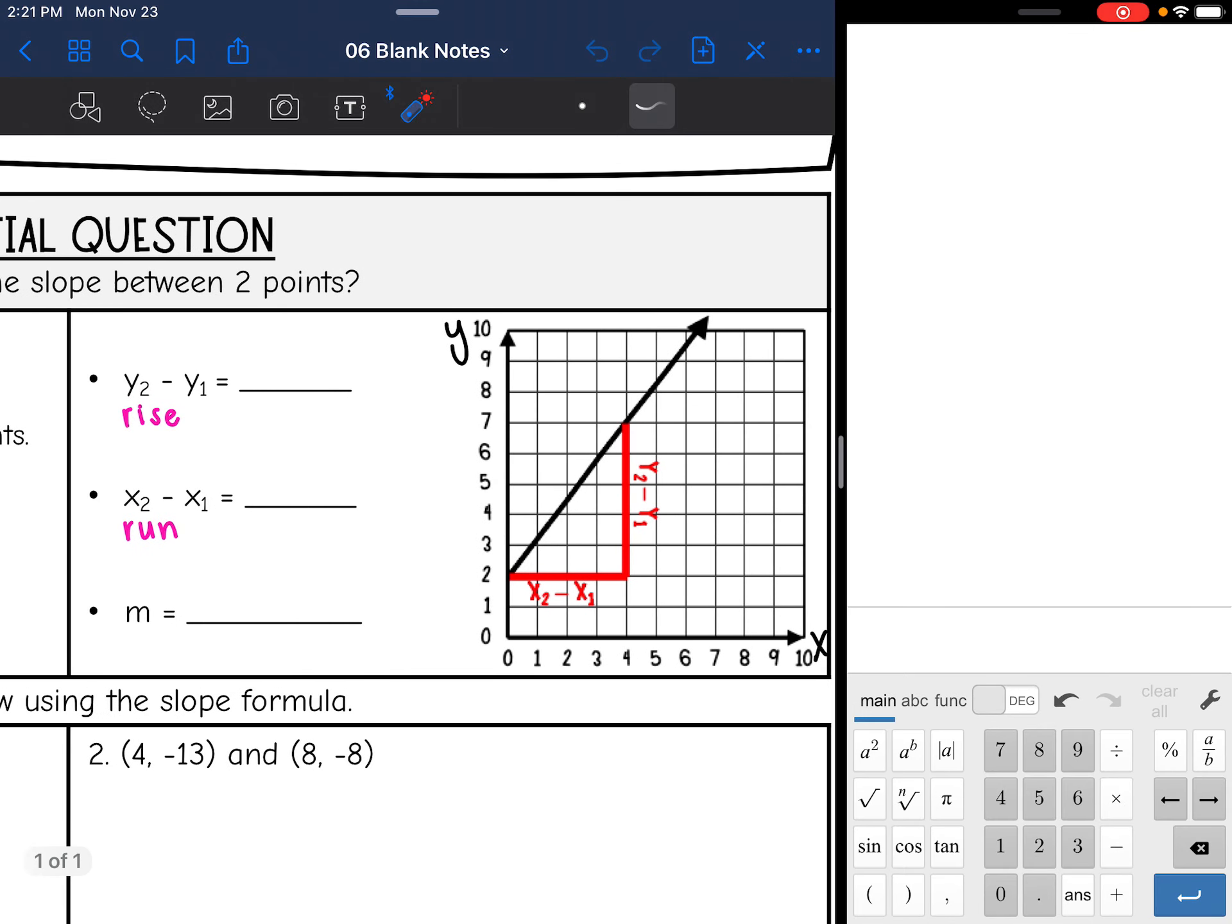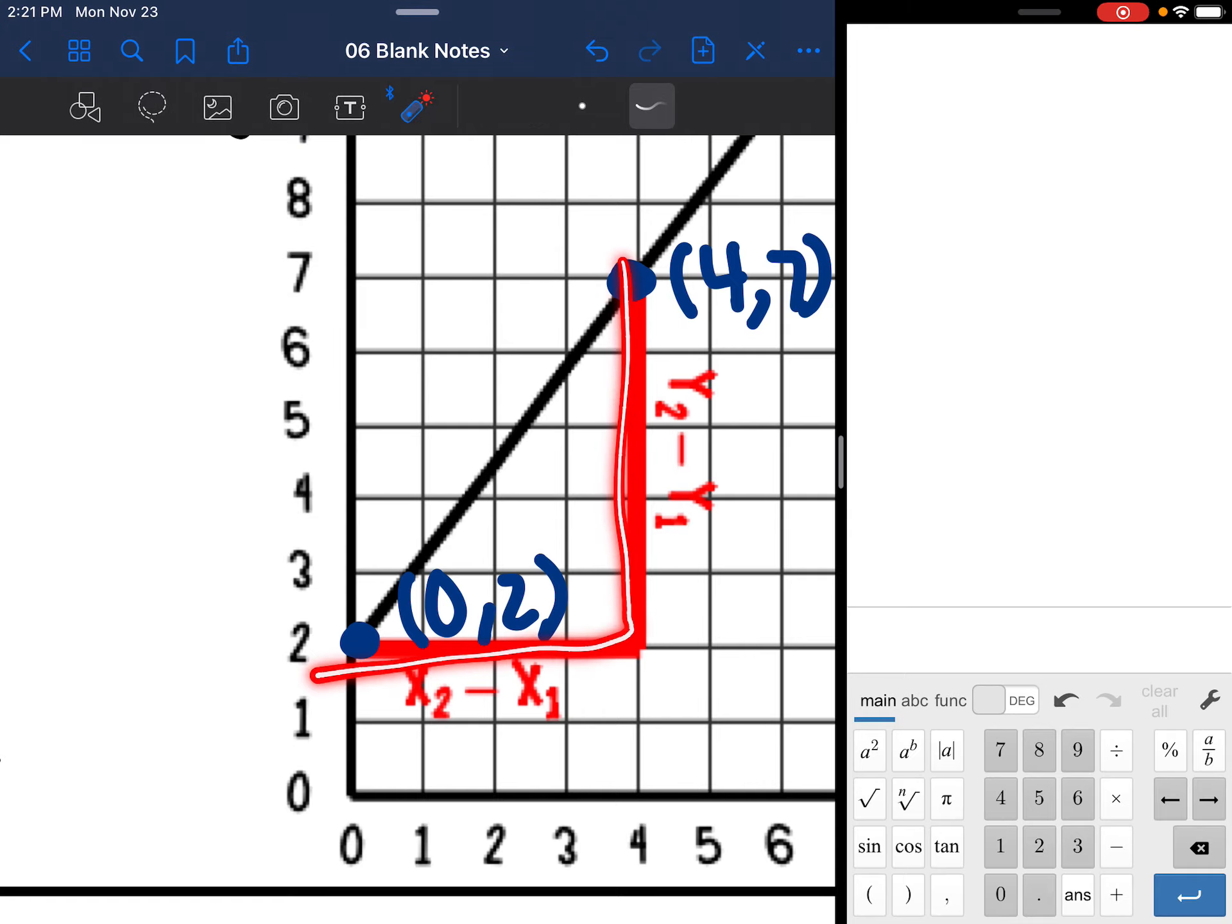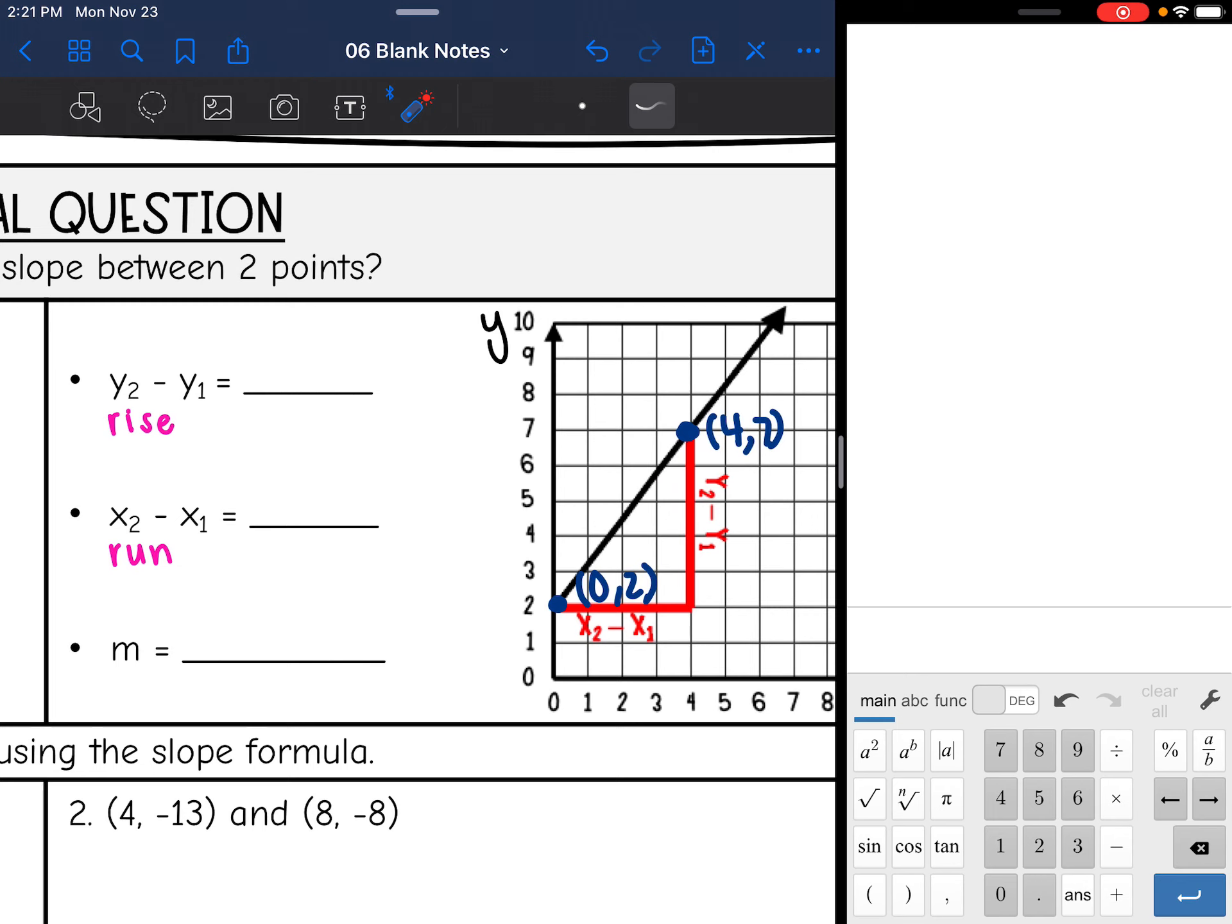So let's practice it on a graph first. Let's write out the ordered pairs here. So the ordered pair of this first point right here is 0, 2. And then the ordered pair of the second point right here is 4, 7. So instead of counting the rise and the run like we normally do, we're going to use the slope formula. We're going to do y2 minus y1 and then we will divide it by x2 minus x1. So we're going to start with the second point, which is the top one. And the y value there was 7. And then the first y value was 2.